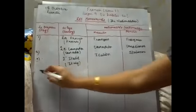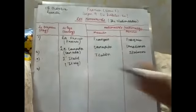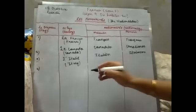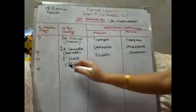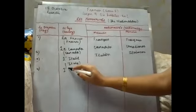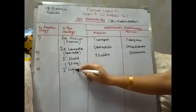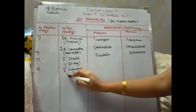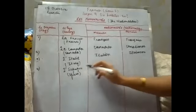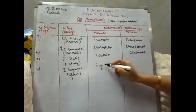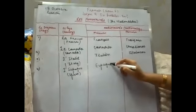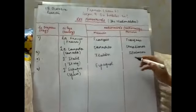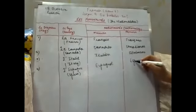Then comes your fourth one, L'Espagne. L'Espagne means Spain. The nationality of Spain is Espagnol. Listen to the pronunciation properly, Espagnol, and I'll add E to it to make it feminine, Espagnole.